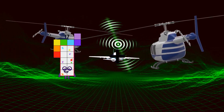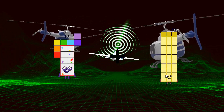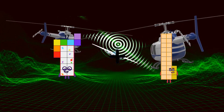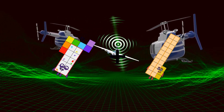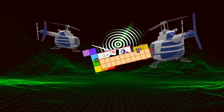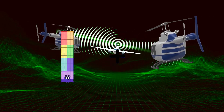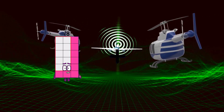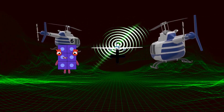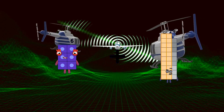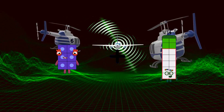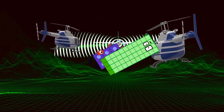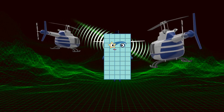17 plus 23 equals 40. 6 plus 44 equals 50.